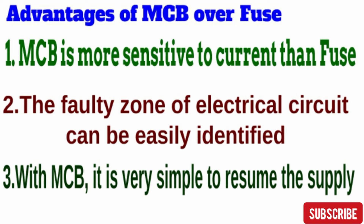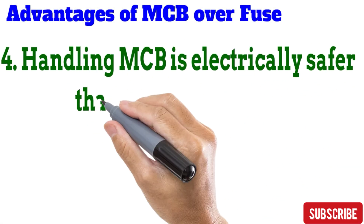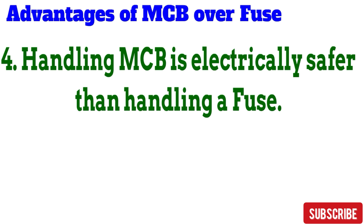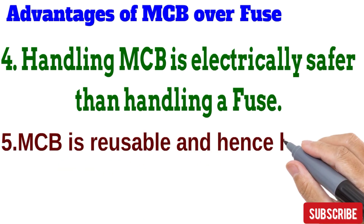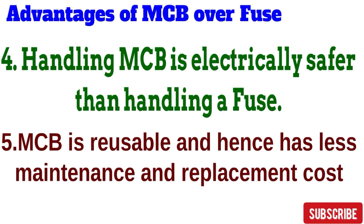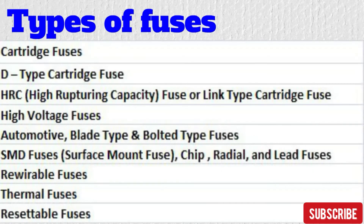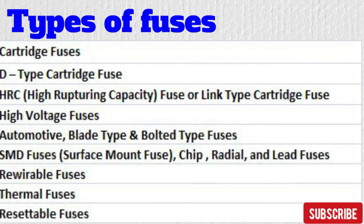Third, an MCB is very simple to resume power supply — if it has tripped, you just need to push the knob back to the on position. With a fuse, the entire fuse wire needs to be replaced. Fourth, handling an MCB is electrically safer than handling a fuse — the user is not exposed to live electrical parts, whereas replacing a fuse carries a risk of contact with a live wire. Fifth, the MCB is reusable and therefore has less maintenance and replacement cost, whereas a fuse must be replaced whenever it goes faulty.